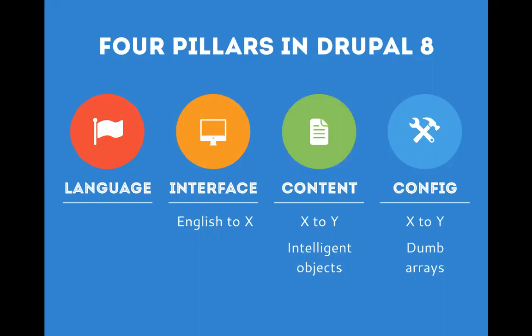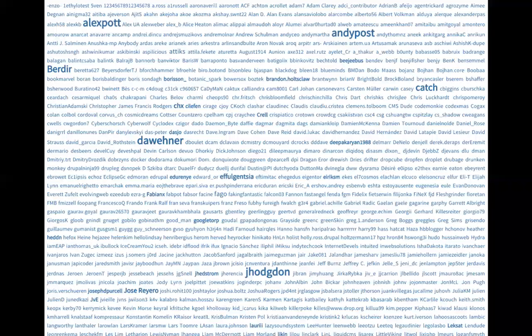One more thing to note: we have all of these features in core — languages managed, interface translated, content and configuration translated — but they use separate user interfaces with no built-in integration with translation memories or translation service providers. That's a feature that contributed modules like Lingotech provide very well, making it much easier to deal with translatability across content, configuration, and interface regardless of origin. Again, all the features presented are thanks to the 1,600 people who worked on these for more than four and a half years.